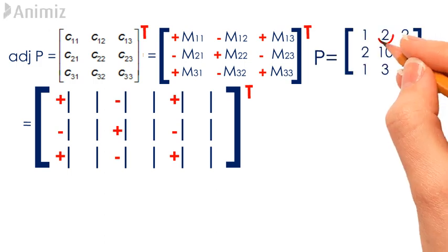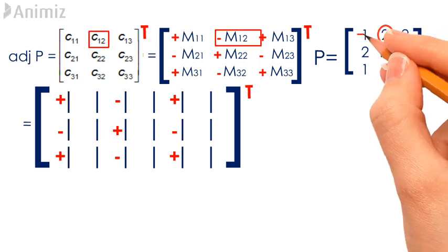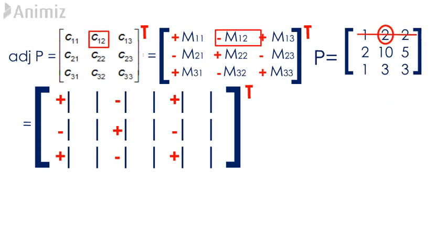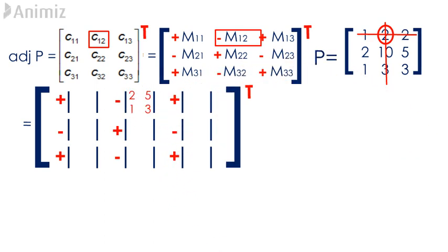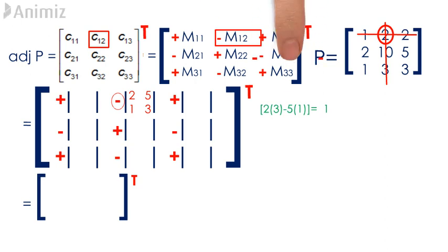For the (1,2) position, blocking the first row and second column leaves us with 2, 5, 1, 3. The determinant, found using the product of 2 and 3 minus the product of 5 and 1, gives us 1. Bear in mind that the sign of the cofactor in front of 1 here is negative.